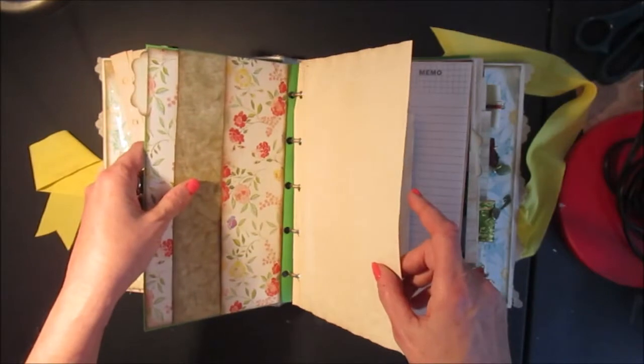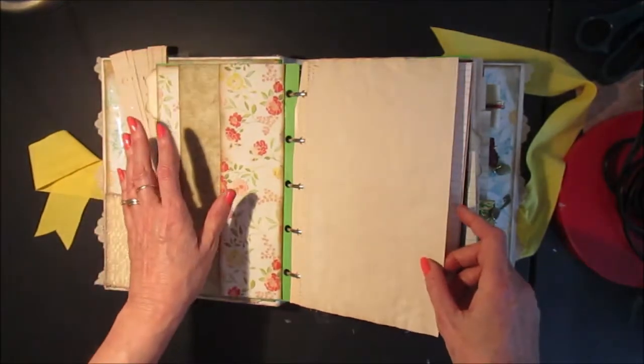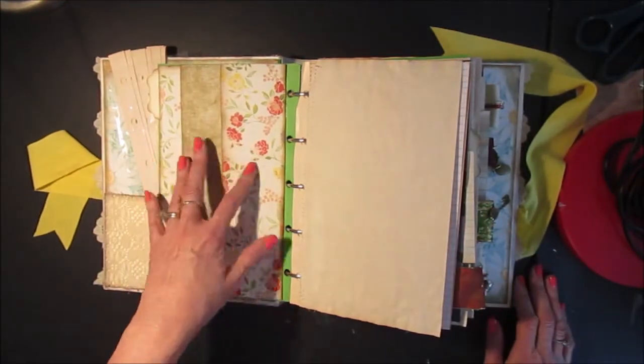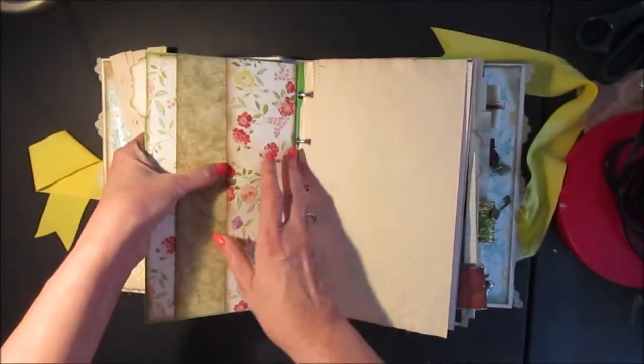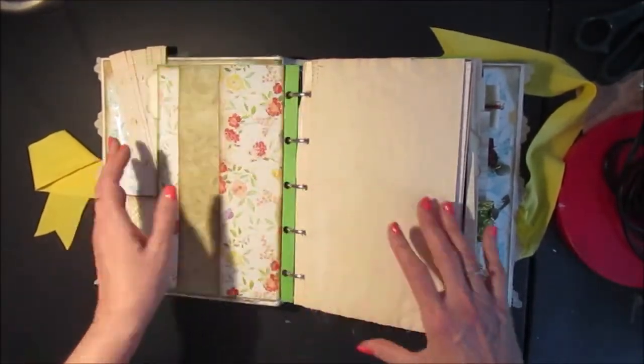So inside each of the dividers there's either a pocket or a paper bag. I made a double pocket here for tucking stuff in.